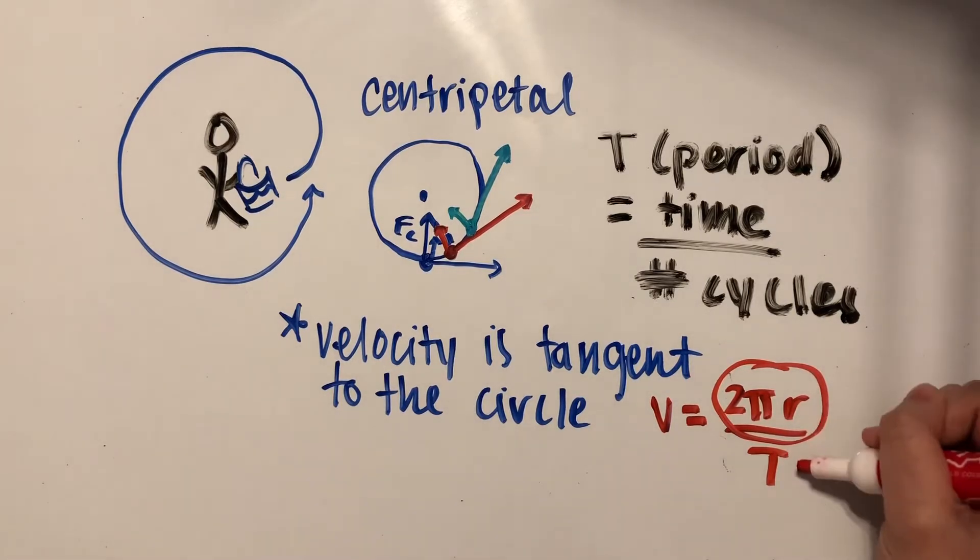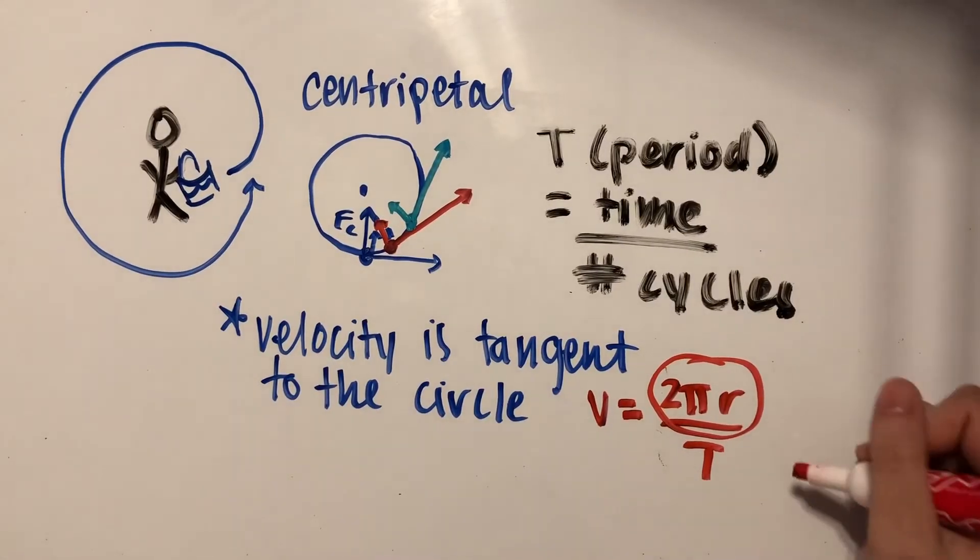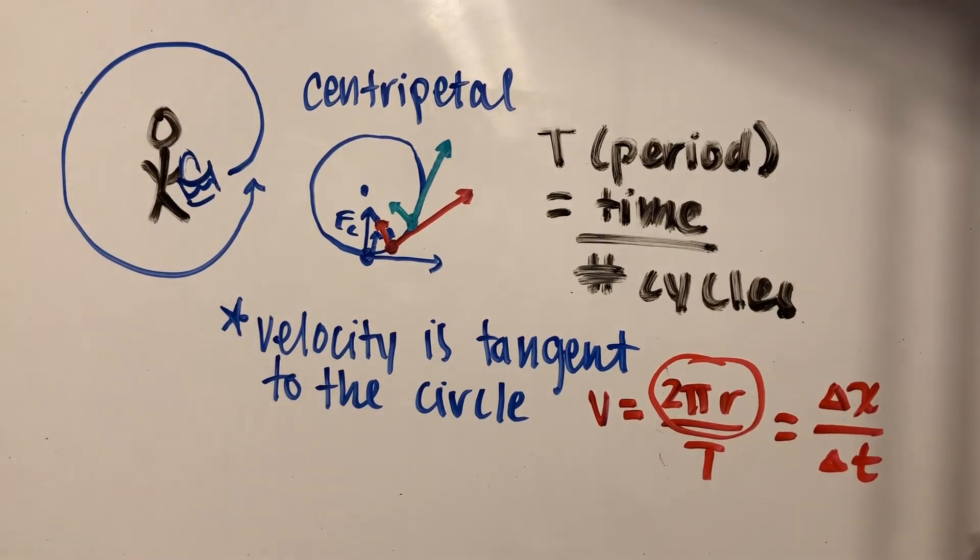We're dividing that by the time it takes to go through one cycle. This is basically just equal to Δx over Δt, which looks more familiar. The circumference is equal to the displacement of the object, and the period is basically just Δt, or the amount of time that's passed.